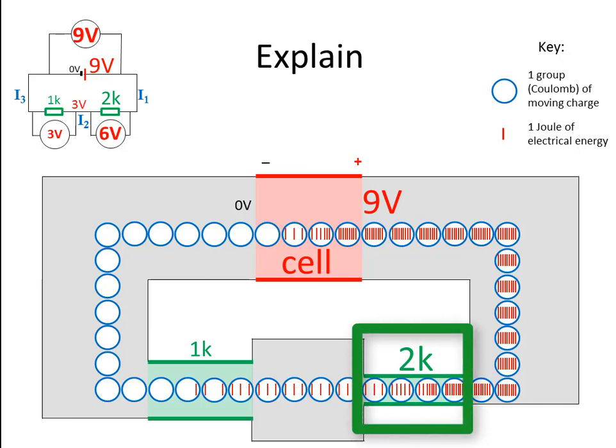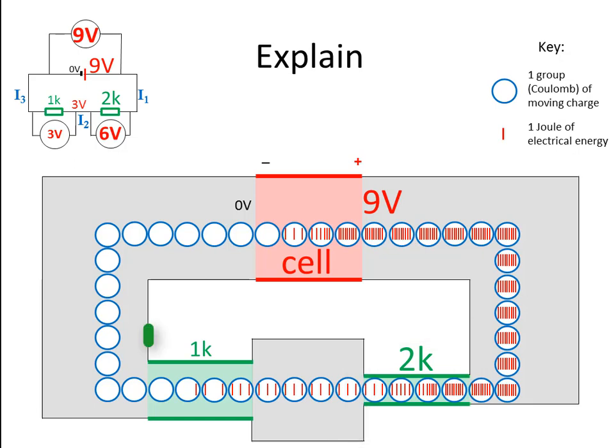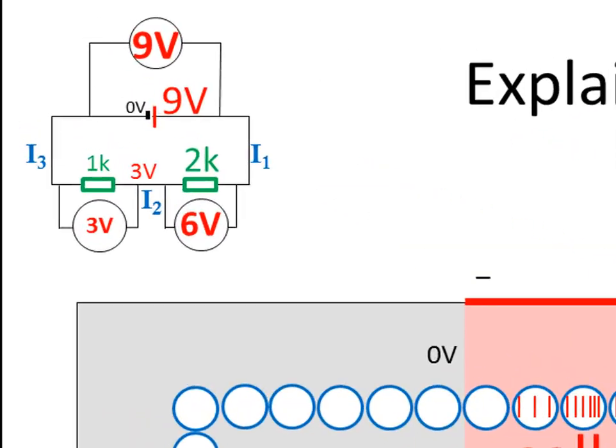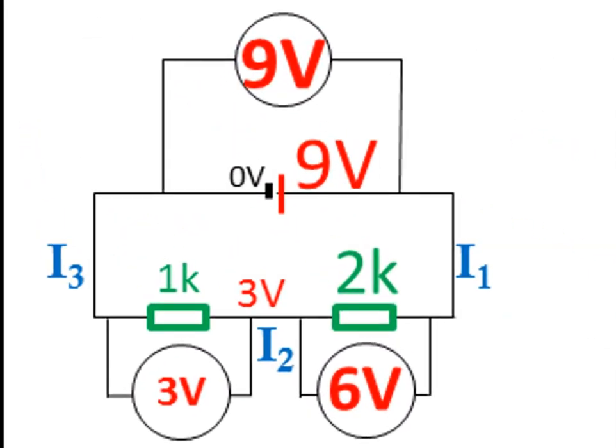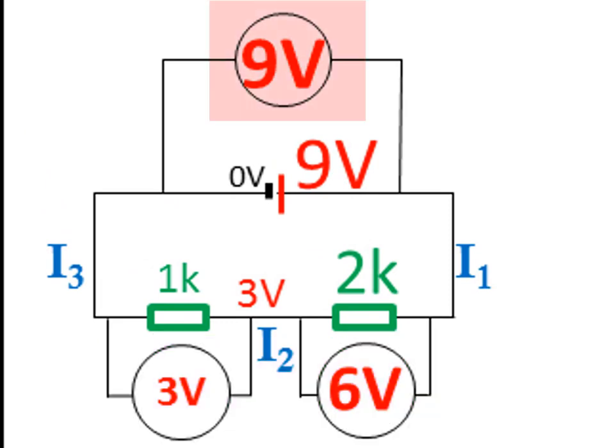The more difficult a resistor is — the higher its resistance — the more voltage it can take out, because the charges have to struggle more when going through it. As they struggle more, more energy and more voltage gets taken out of them. So the resistor with a higher resistance has a higher voltage across it than a resistor with a lower resistance. When you add the voltages up, the sum of the voltages across the resistors equals the voltage across the battery, because what the battery gives, the resistors take between them.